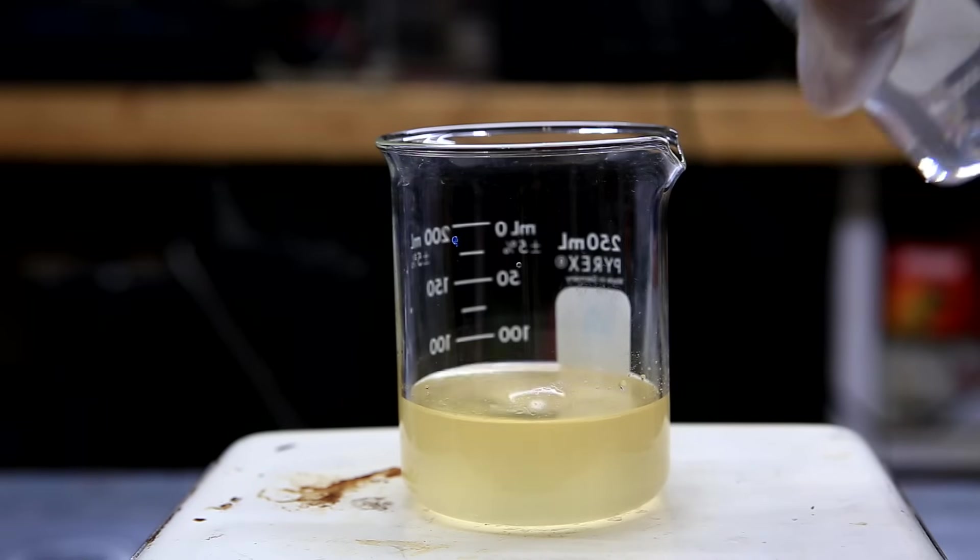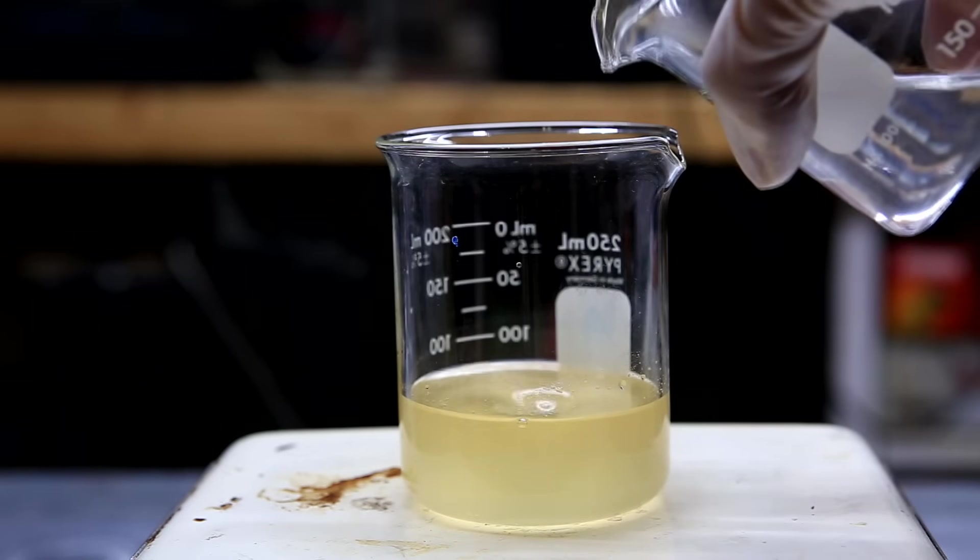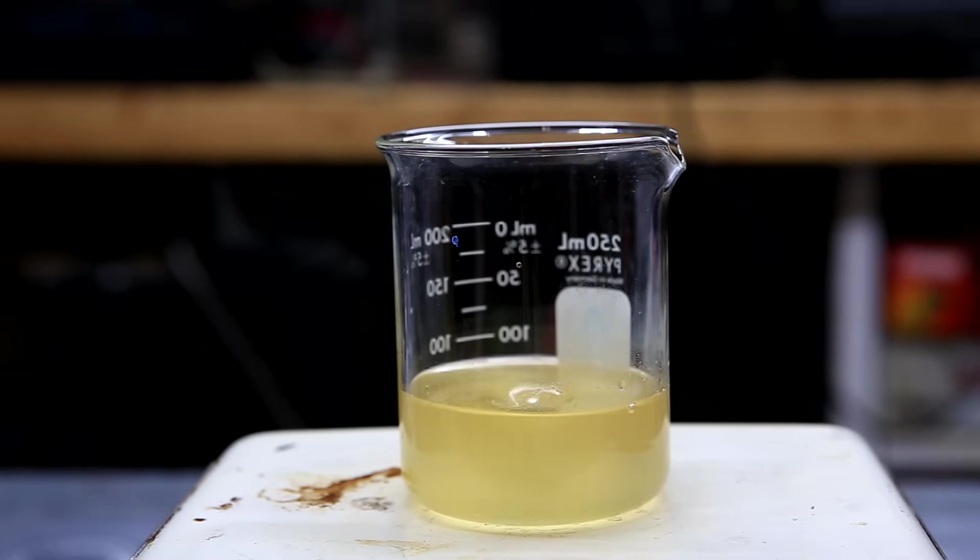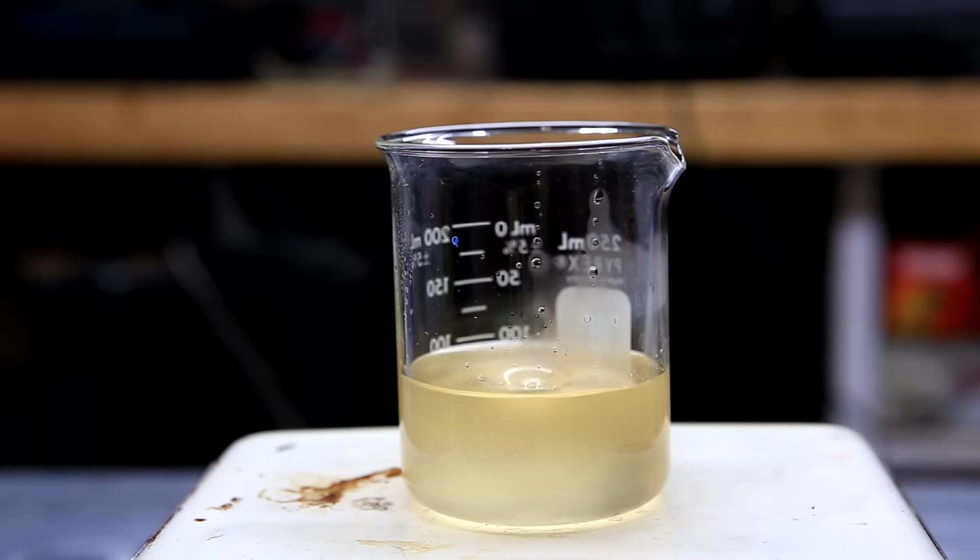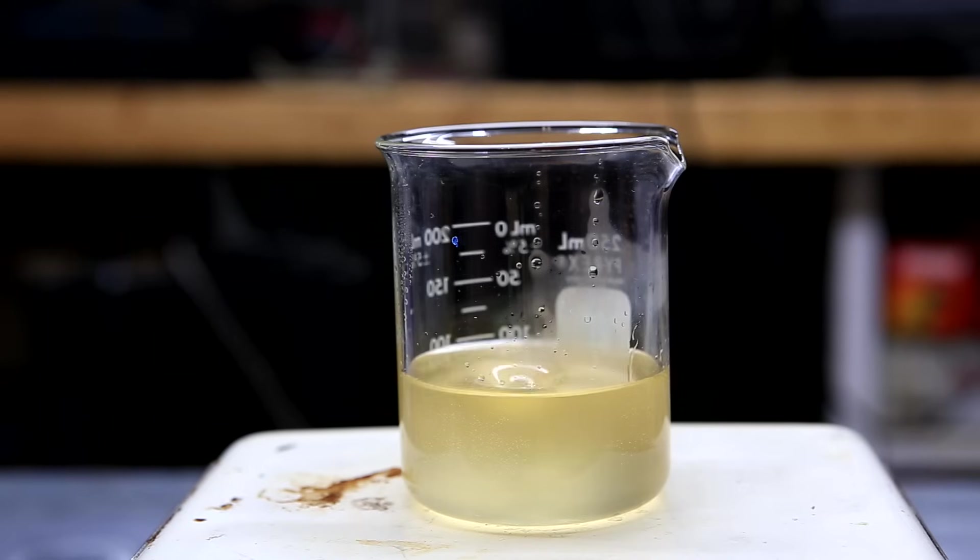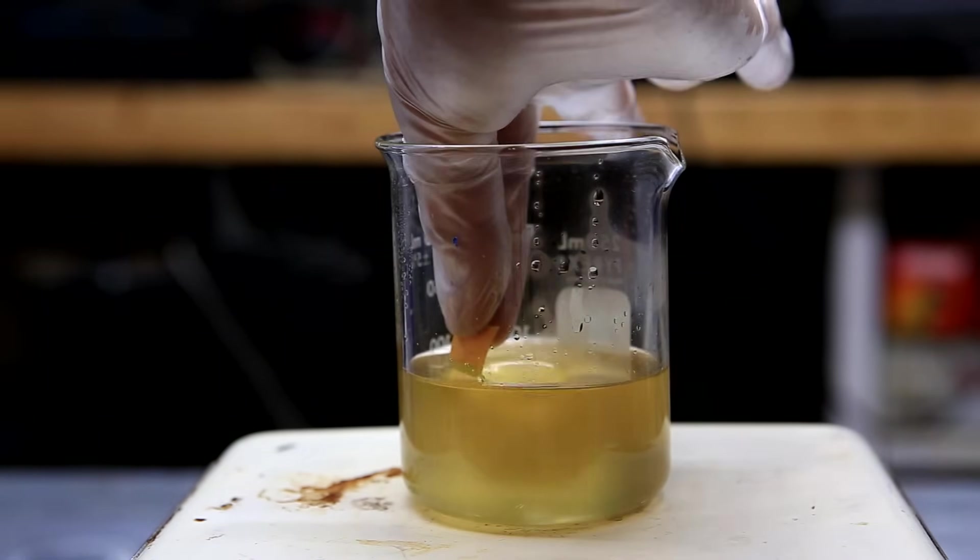To do this, the pH was adjusted using small amounts of dilute sodium hydroxide solution. This step can be a little difficult and frustrating because it's very easy to overshoot by adding too much sodium hydroxide and then you'll have to re-acidify by adding small amounts of dilute hydrochloric acid. When a pH of around 7 is achieved, the next step is to evaporate a lot of the water.